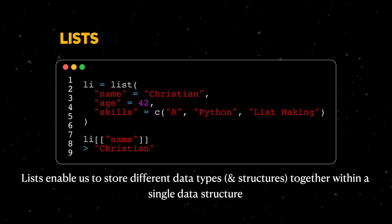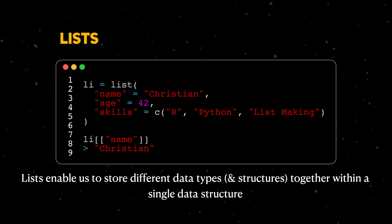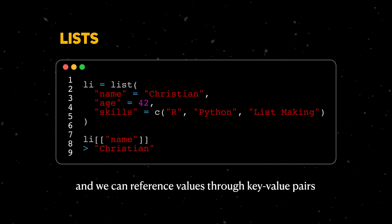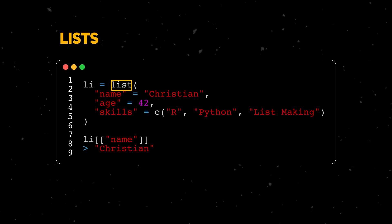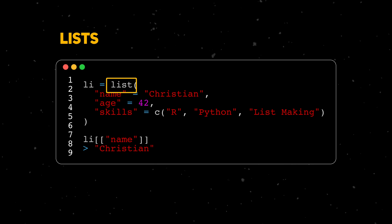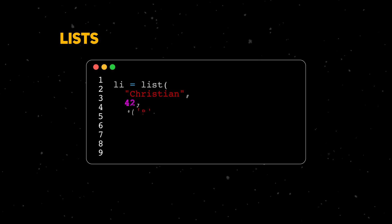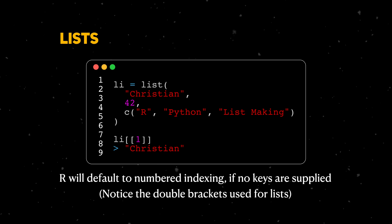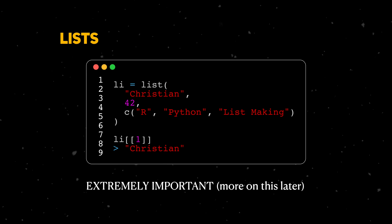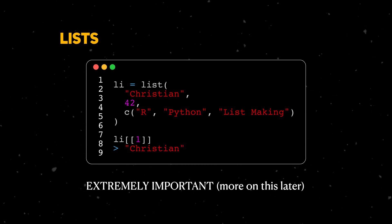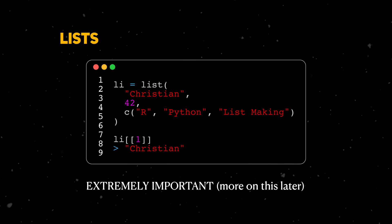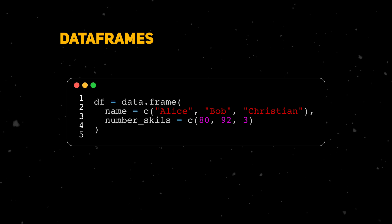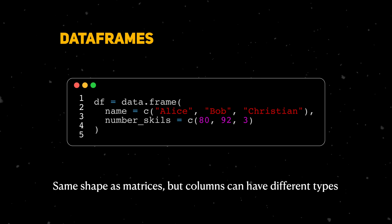Now we come to lists. Lists enable us to store different data types in the same structure and let us store data in terms of key-value pairs. We use the list function to create lists. If we don't specify names for the keys, R will use numbers to index the list elements. Lists are extremely important and we'll come back to them later in the video.